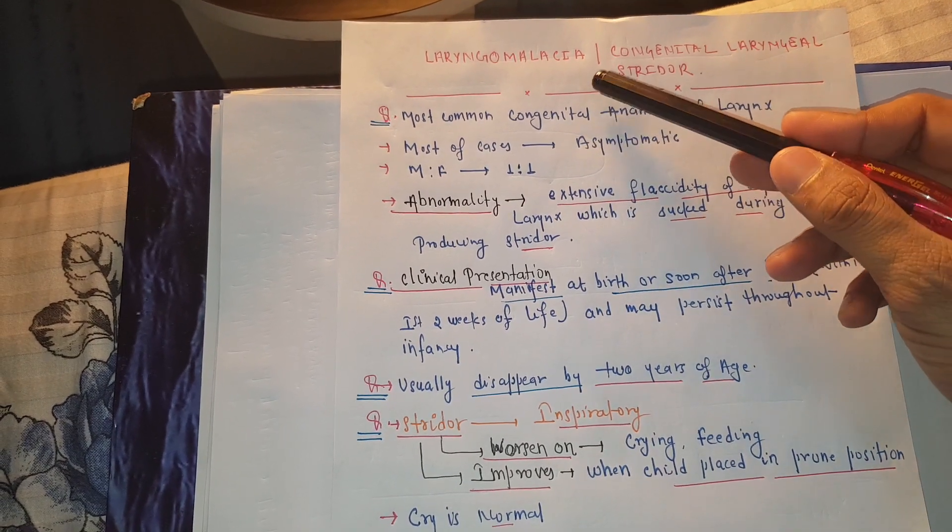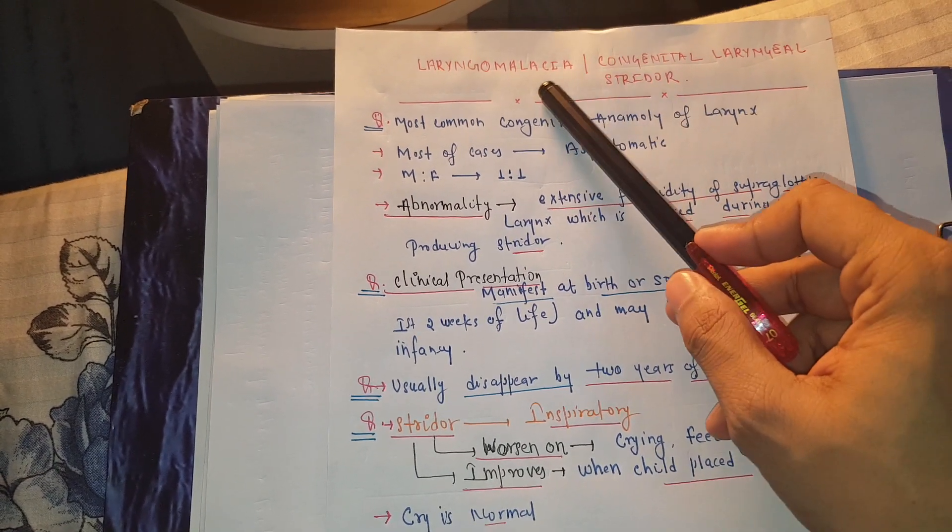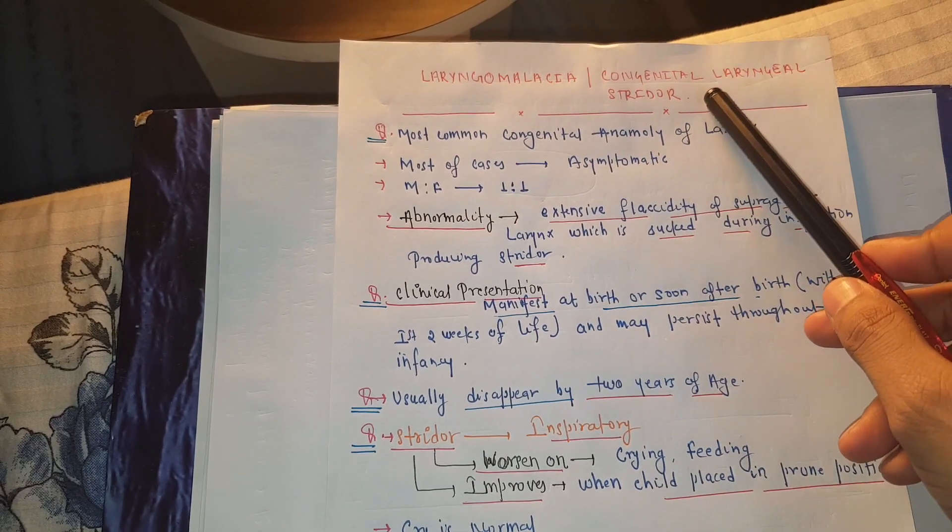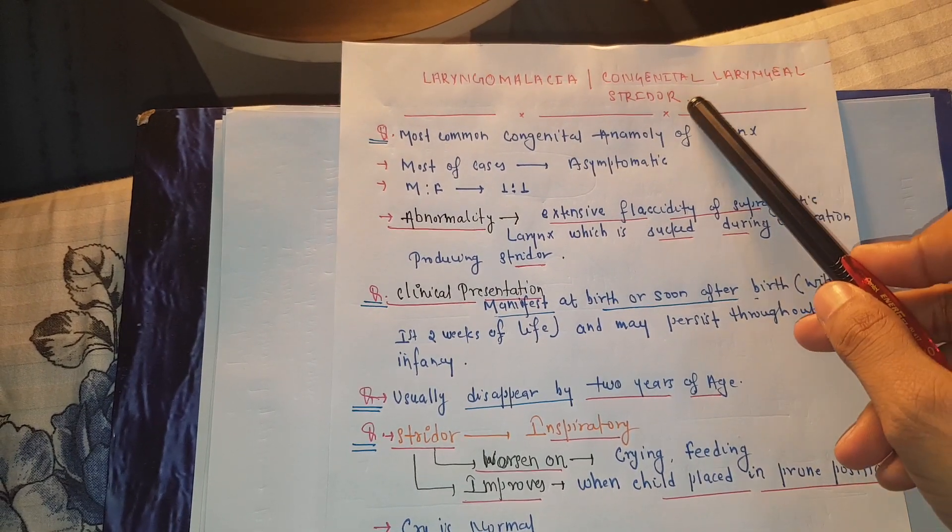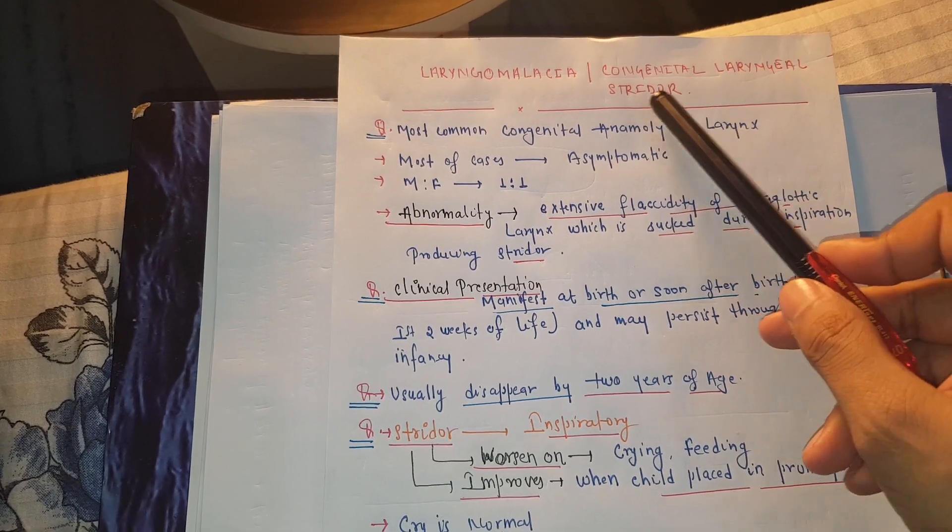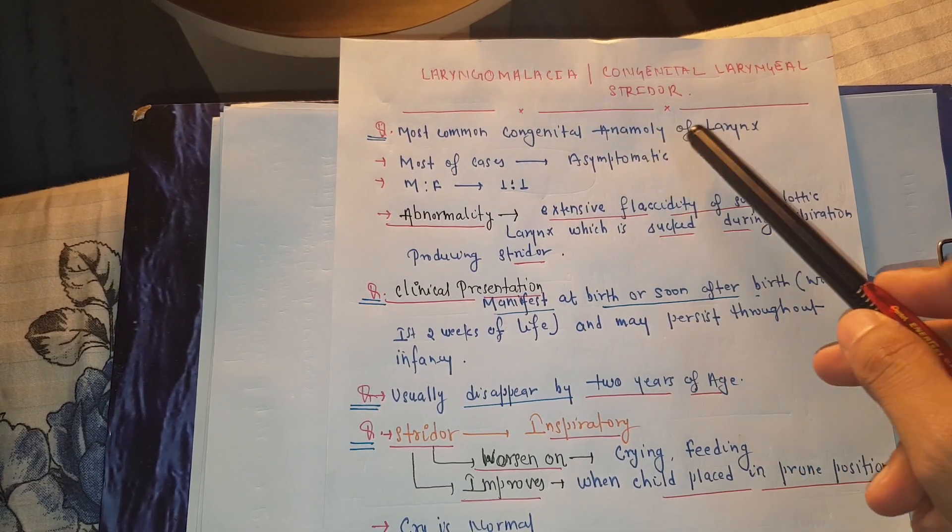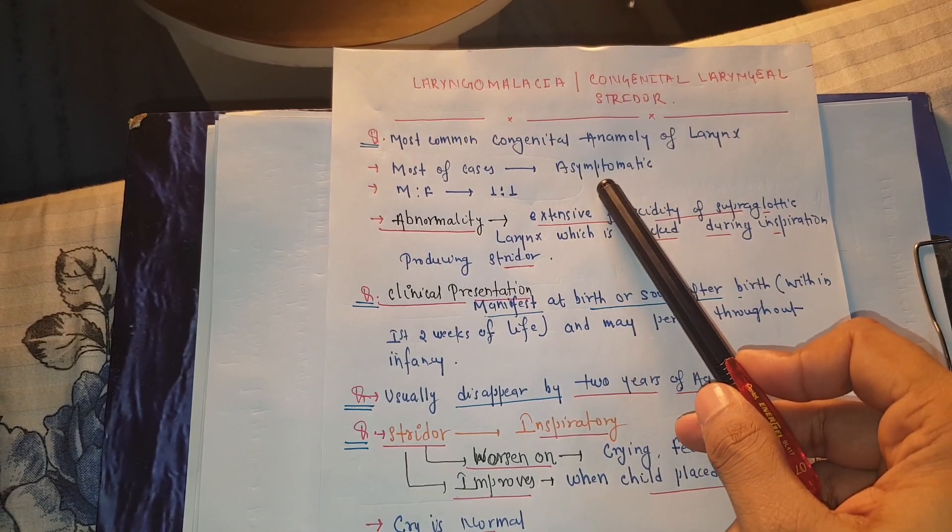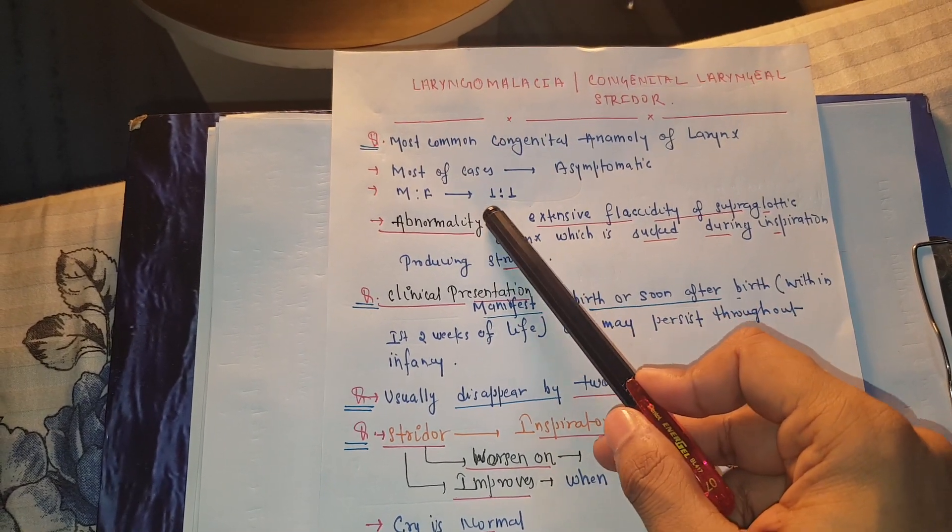Hello friends, today we will discuss laryngomalacia. Laryngomalacia is also known as congenital laryngeal stridor. It is the most common congenital anomaly of the larynx. Most cases are asymptomatic. The male to female ratio is one to one.